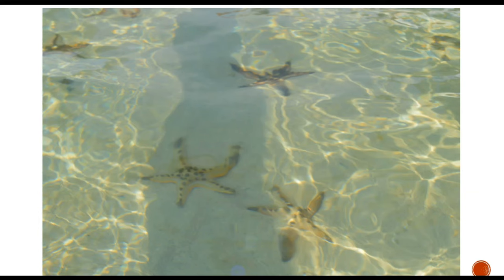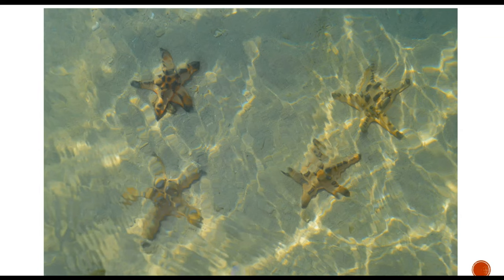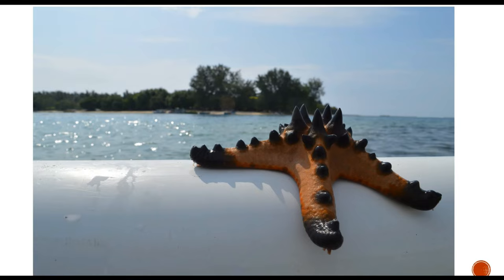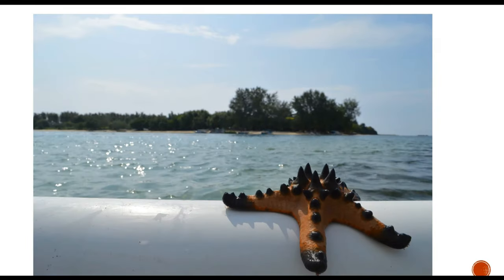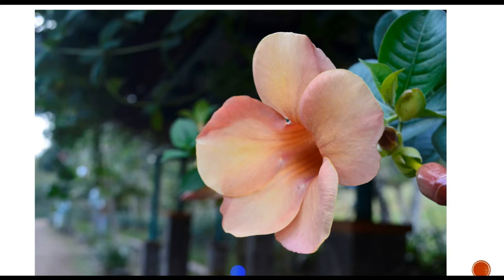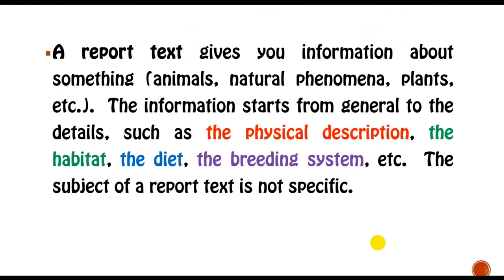In report text, we are going to talk about interesting things like you see in pictures. This is the picture of starfish — very unique animals. And then probably you also want to talk about plants. I give you an example: this is a flower. So, a report text gives you information about something.